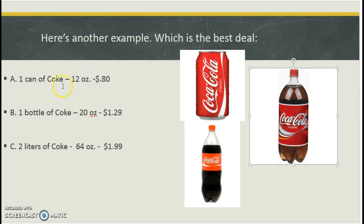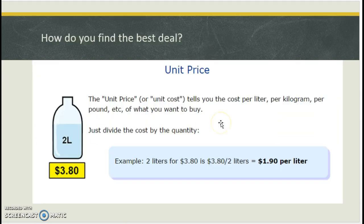Even this one, it's about, let's see, so this would actually be the worst price, it turns out. And that's what we're going to look at, the unit price. The cost per liter per kilogram that you want to buy something. So 2 liters at $3.80, $1.90 a liter.